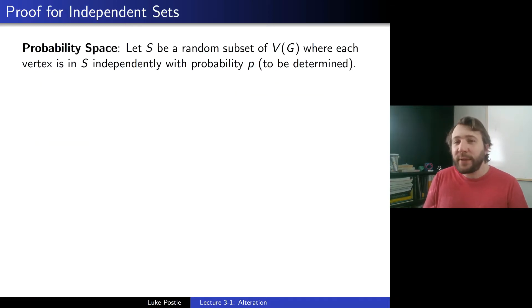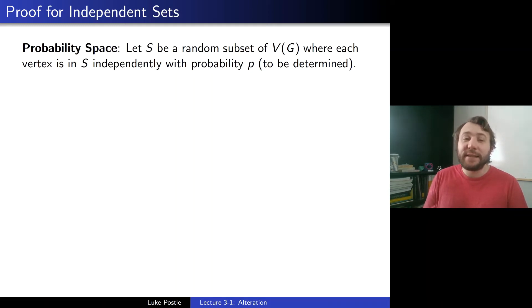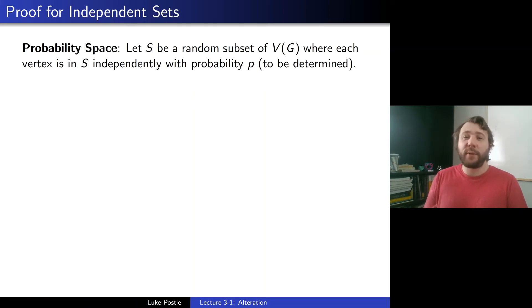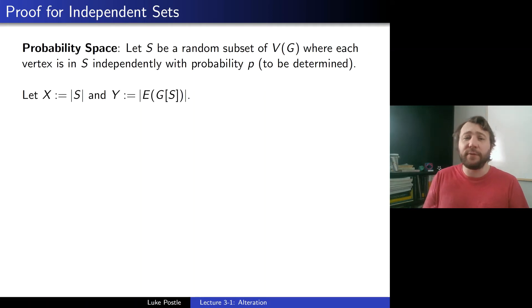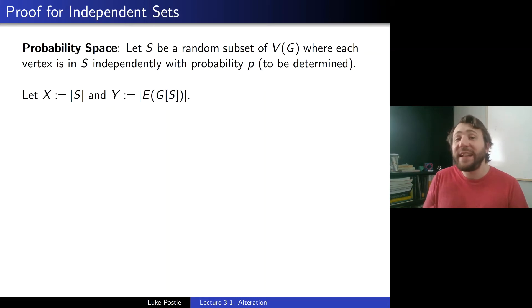Let's prove α(G) ≥ N/2D using alteration. The probability space: let S be a random subset of V(G) where each vertex is included independently with probability P, to be determined. We want to find a large independent set. Let's pick a set at random — it might not be independent, but we will alter it. Let X be the size of S and Y be the number of edges in G[S].